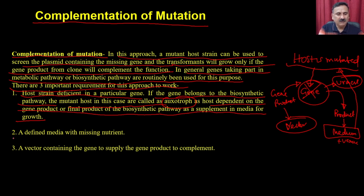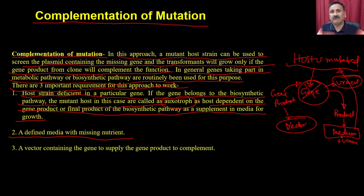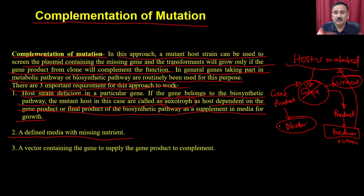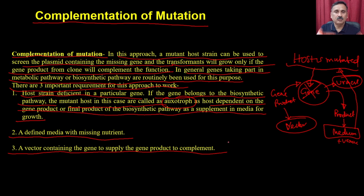Second, you should have a defined media with the missing nutrients. While growing this host you can use media containing uracil, but you should also have a defined media where that nutrient is missing — so that when the nutrient is absent, the host depends on the vector to supply the gene. Third, you require a vector containing the gene to supply the gene product to complement.